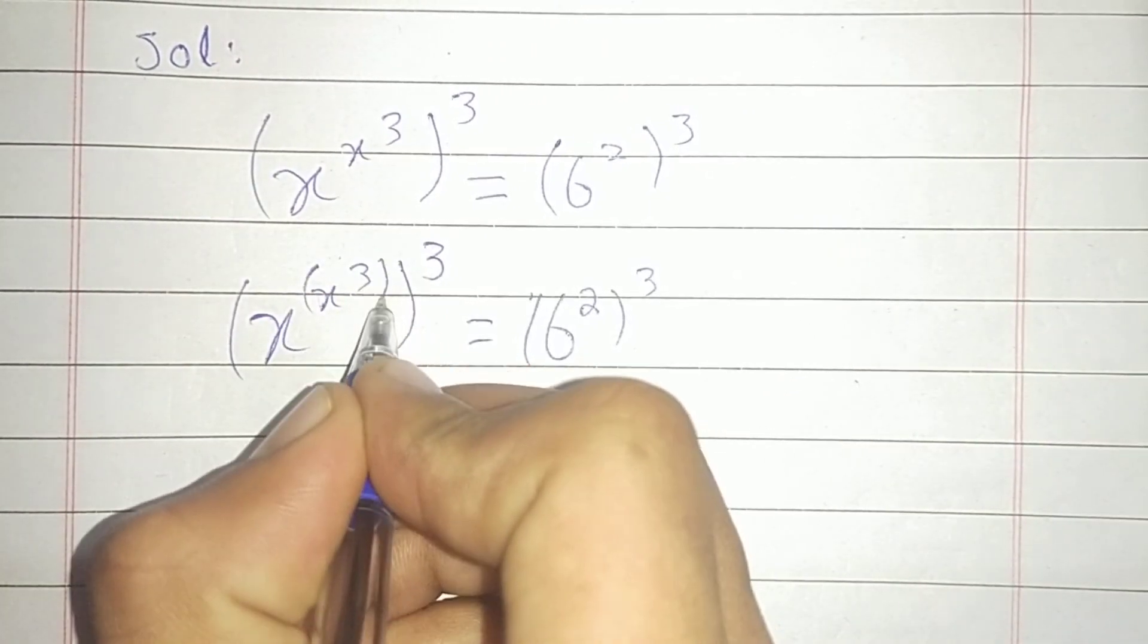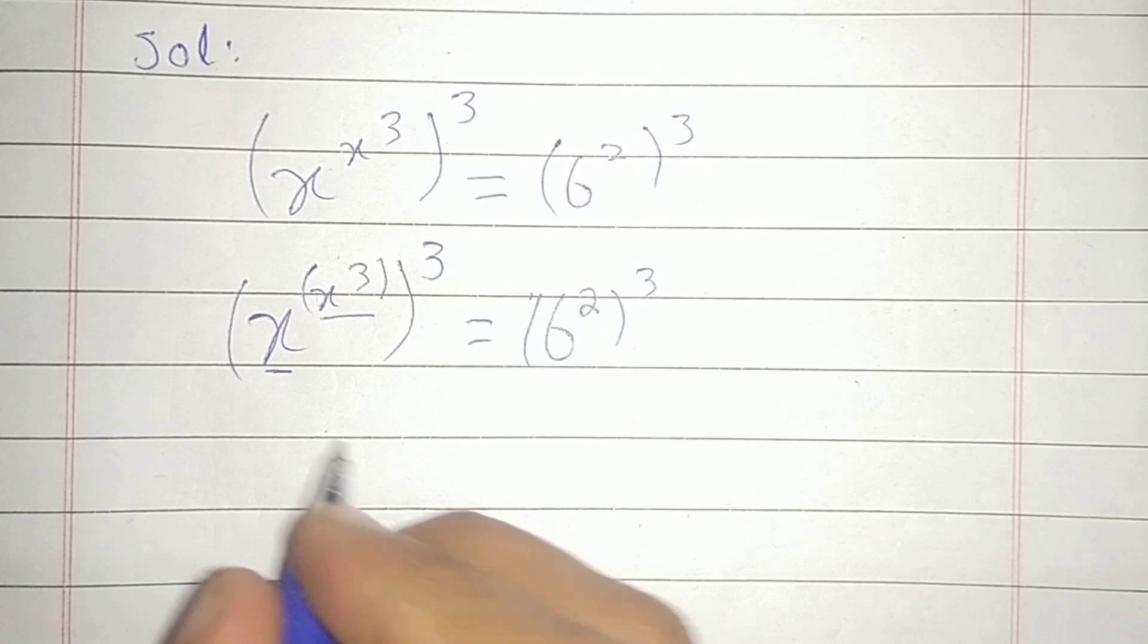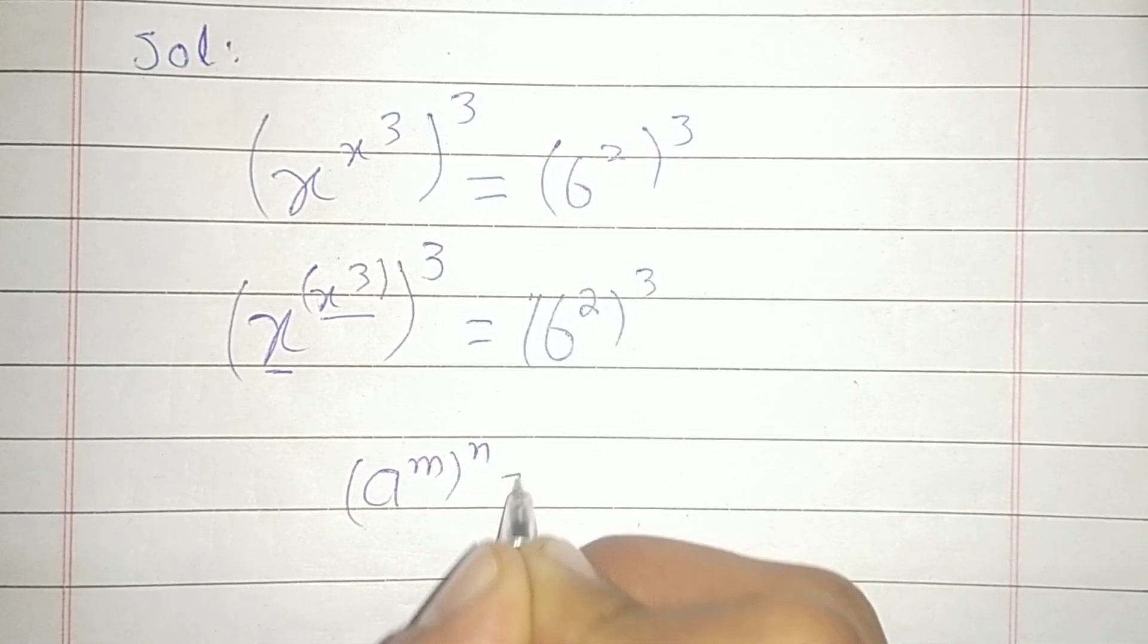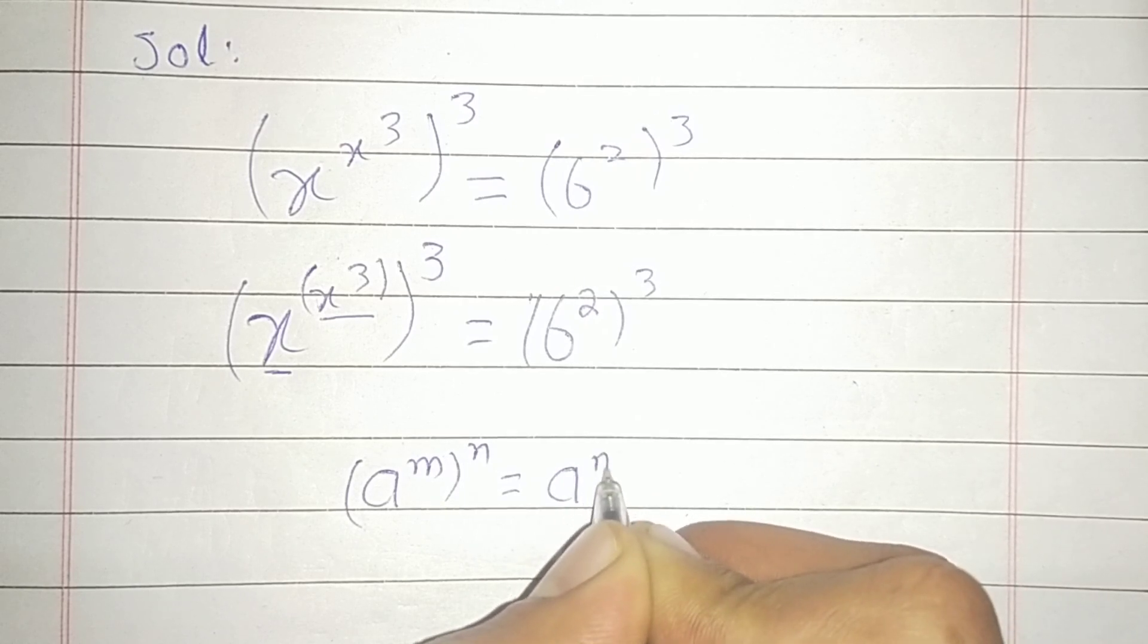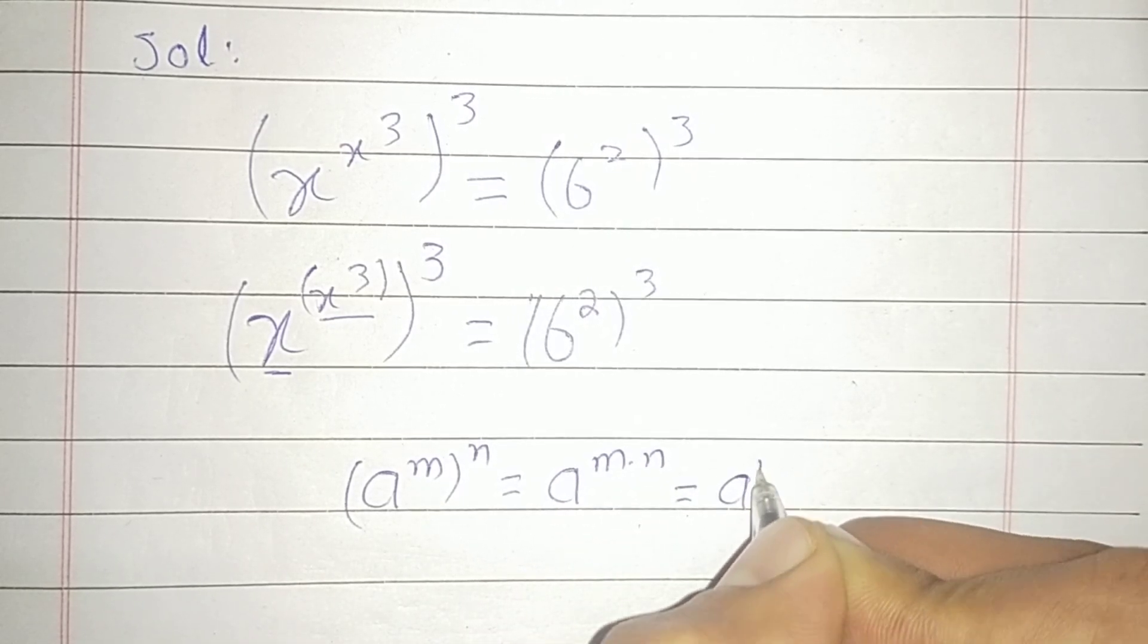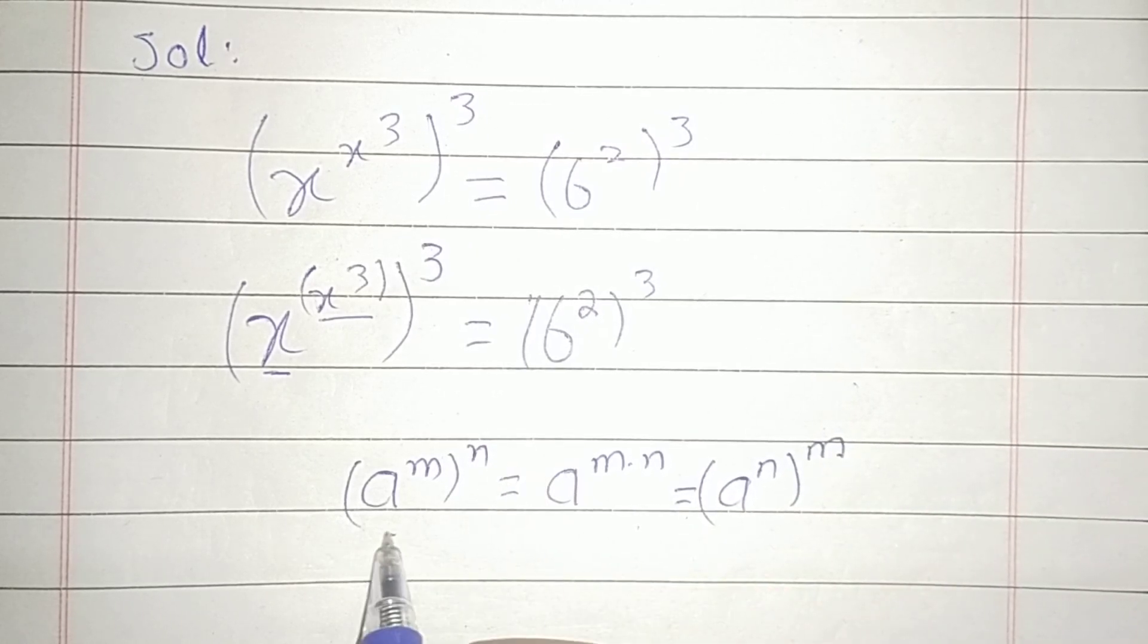We take x^3 as the power of x, so we have the identity (a^m)^n = a^(m·n), which is equal to (a^n)^m. From this to this, we just swap the powers.